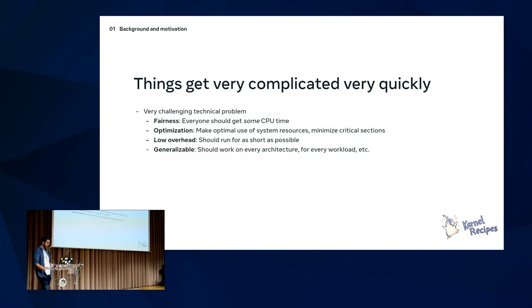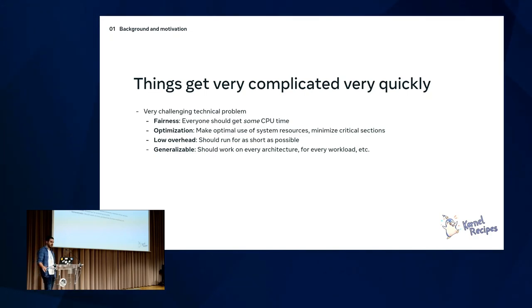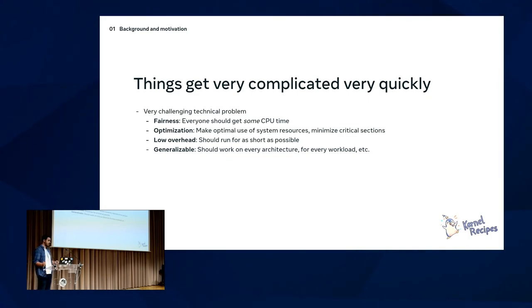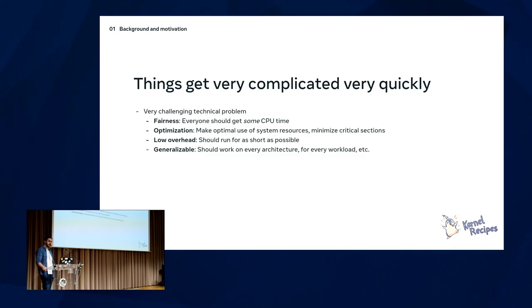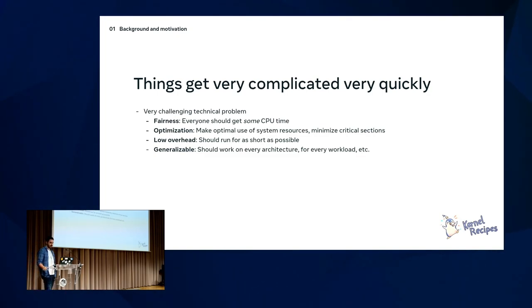You need to enable fairness — you don't want some tasks to always get the core while others never do, even if one is higher priority. You want to make optimal decisions: don't migrate a task if it causes a cache miss, but do migrate if the cache doesn't matter and you want to keep latency low. The scheduler must be low overhead — an O(N) walk over every thread would be pretty bad.